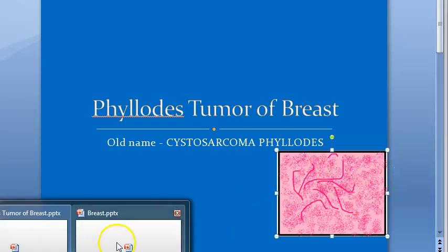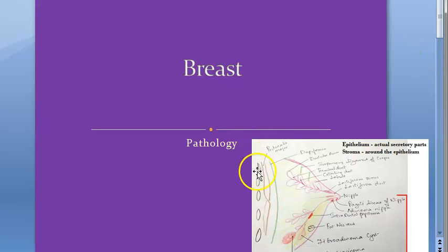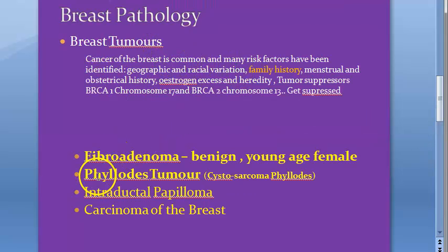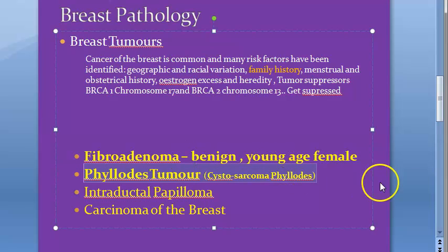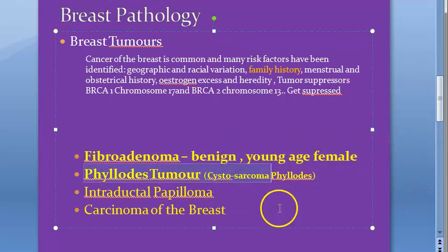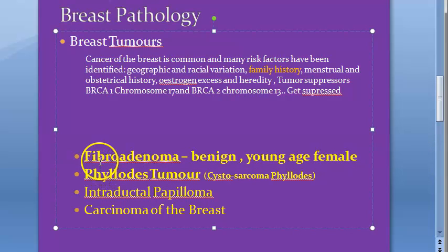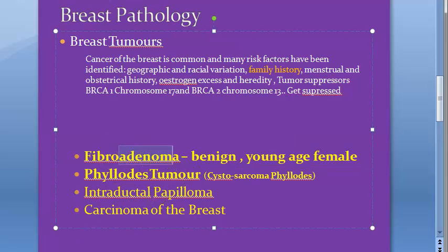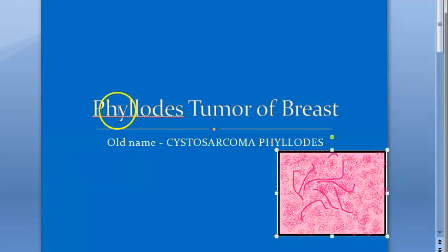In breast pathology, there are non-neoplastic conditions and then there are breast tumors. Under breast tumors, we are going to see phylloides tumor. This can be either benign, borderline, or malignant. In the earlier video we finished fibroadenoma, and now we are looking at phylloides tumor. It is better if you watch the fibroadenoma video first.